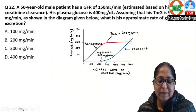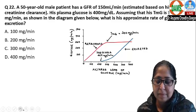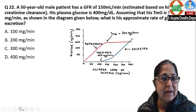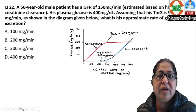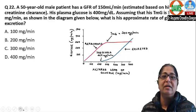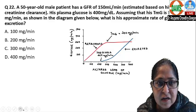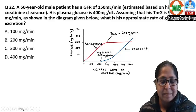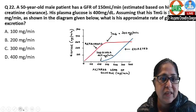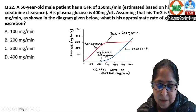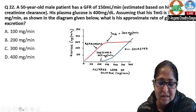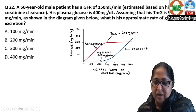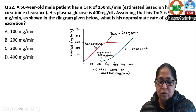A 20-year-old male patient has a GFR of 150 ml per minute, estimated based on his creatinine clearance. Creatinine clearance can be used for GFR estimation, though it is slightly higher than inulin clearance — the gold standard. His plasma glucose is 400 mg per deciliter, and his TMG is 300 mg per minute. What is the approximate rate of glucose excretion?